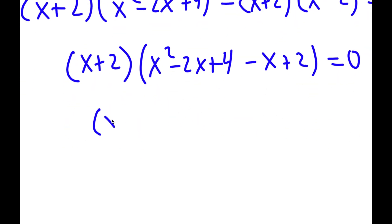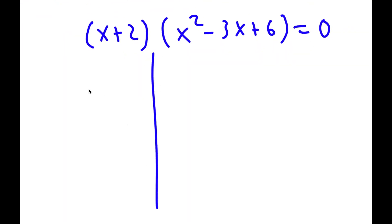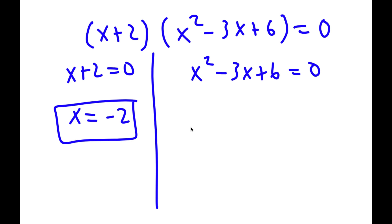This simplifies to x plus 2 times x squared minus 3x plus 6 is equal to 0. So now this gives me two equations. I have x plus 2 is equal to 0, and I have x squared minus 3x plus 6 is equal to 0. For x plus 2 equals 0, x is obviously equal to negative 2, so this is one solution.